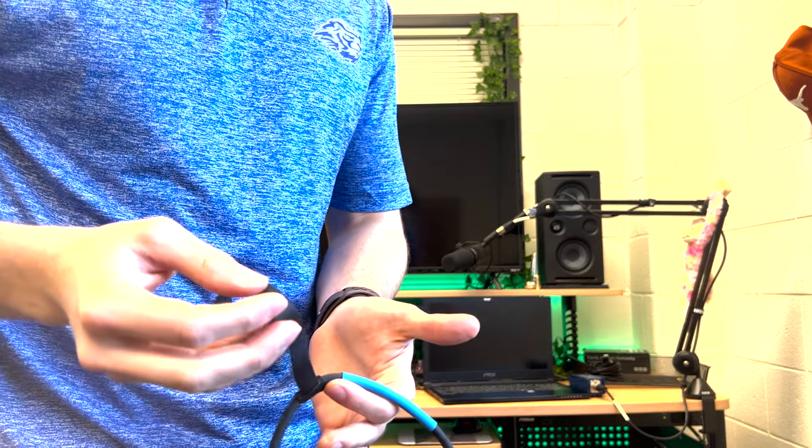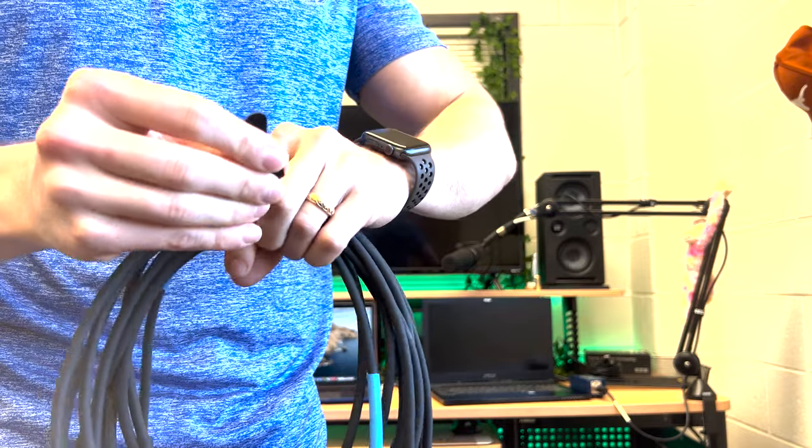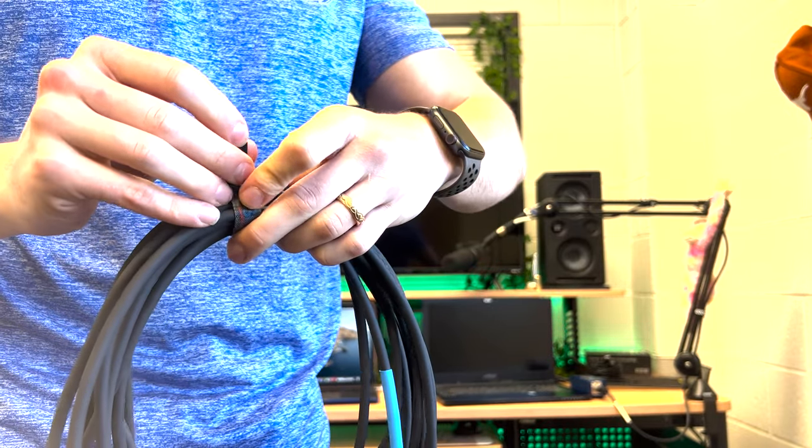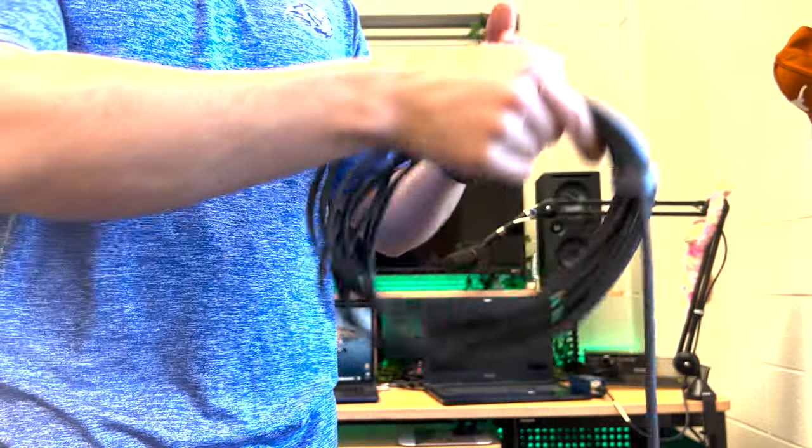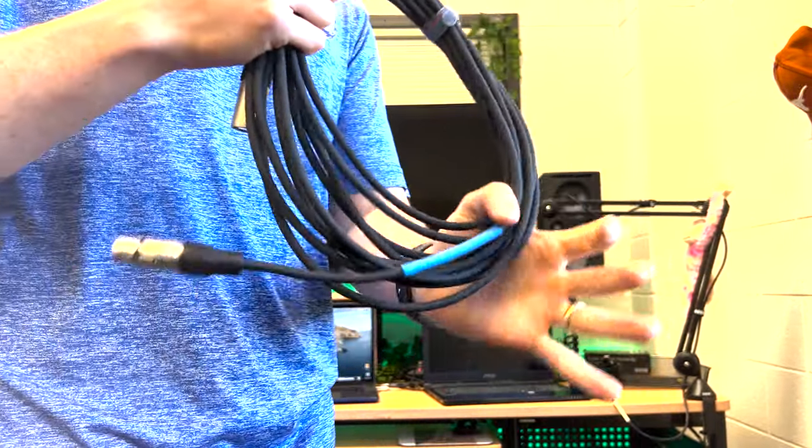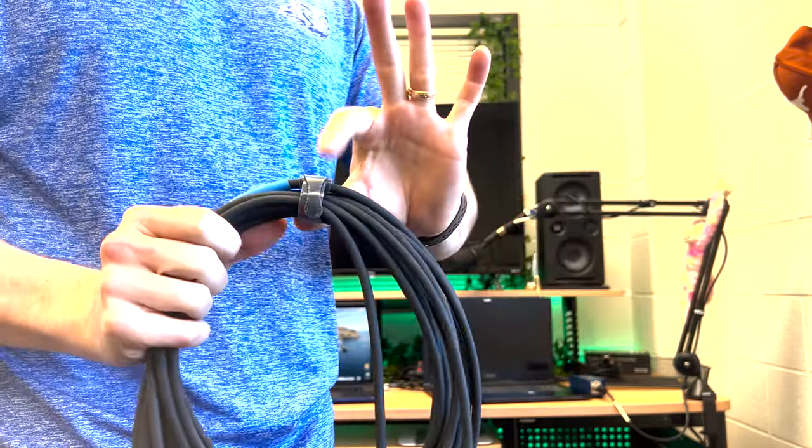And then whenever you wrap the cable, you can take that tie and wrap it over the whole thing. That way, the cable stays in place. Toss it around, throw it around like that, do whatever, and at the end of it, it's still a coiled cable. So these ties are great.